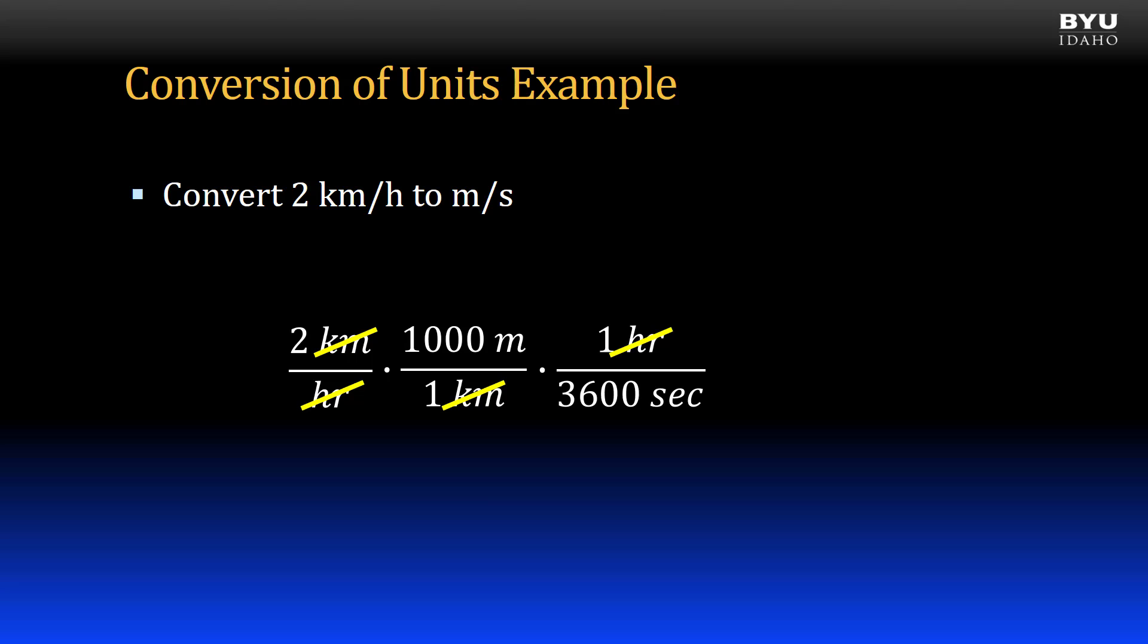Now we can multiply the constants and keep the remaining units, which leaves us with 2,000 meters on the top per 3,600 seconds, or 0.556 meters per second.